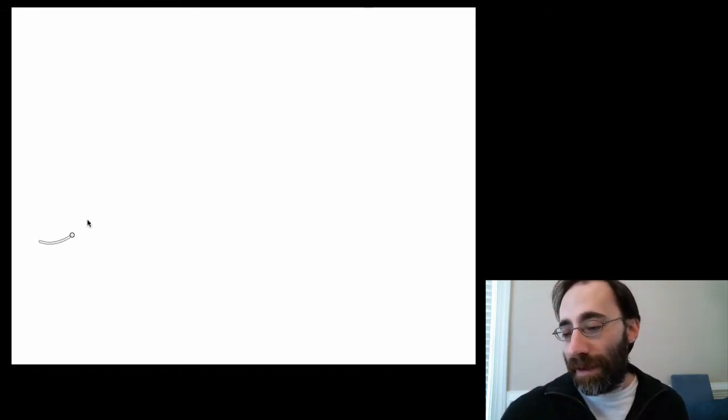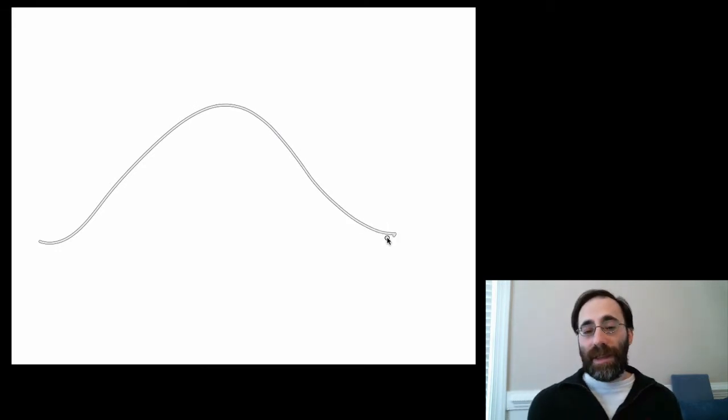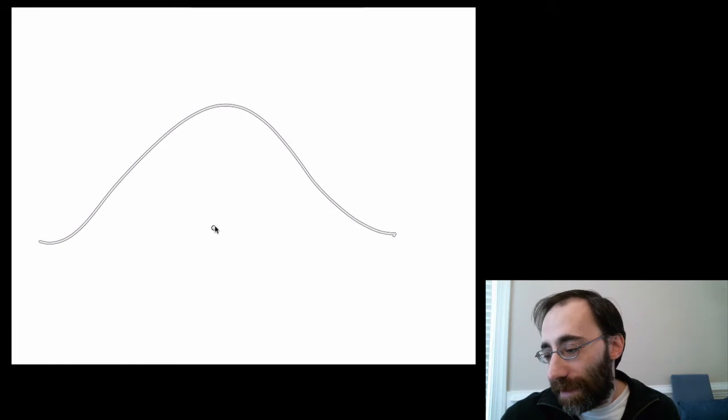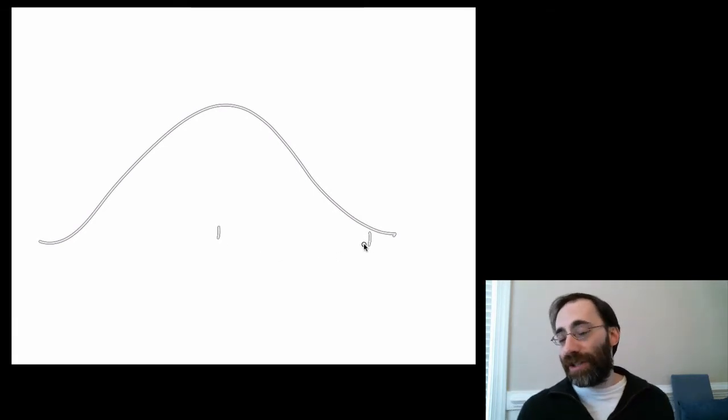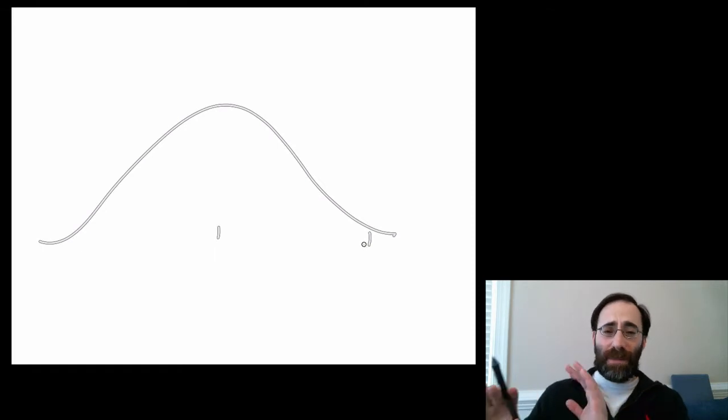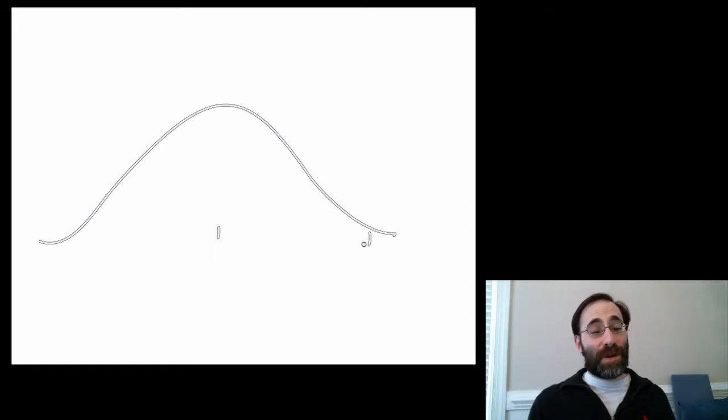If this is a distribution, then you might want to know what the chances are of being between here and here, given some distribution of probabilities. This will all become much clearer in the next part of the class when we talk about probability. This is just to give you a sense of why we're learning this now.